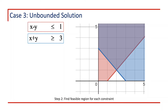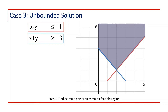Both regions are shown on screen. Moving to Step 3, the common feasible region is now shown. It is clear that the region is not bounded or restricted to a definite area — the constraints cause the common feasible region to extend to infinity in the upward direction. Step 4 is to find extreme points. Since the region is unbounded and goes to infinity, only two definite extreme points exist: point A at (2, 1) and point B at (0, 3). Other extreme points are at infinity.